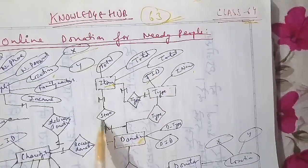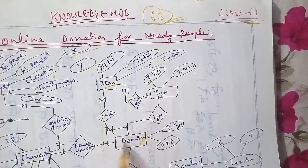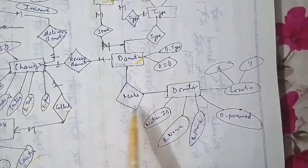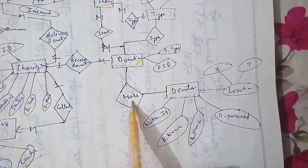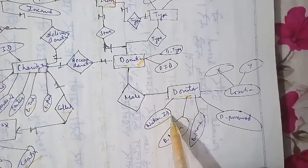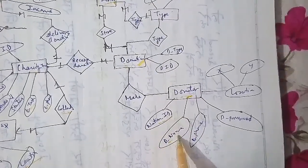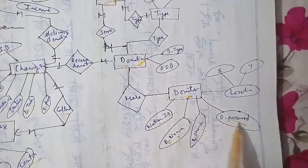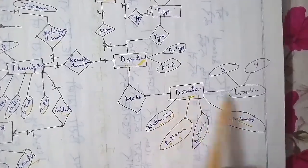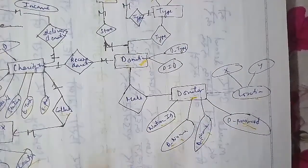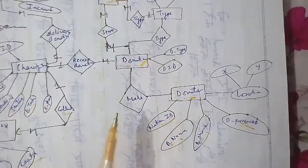The donation has a donation ID and donation type. The donation is made by the donator. The donator entity has a national ID, donator name, phone number, and donator password. The donator location is represented by X and Y coordinates. This is the complete ER diagram for the online donation system for needy people.